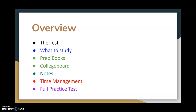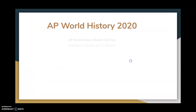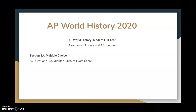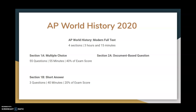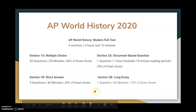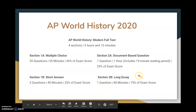The test itself is split up into four sections and is a total of three hours and 15 minutes long. The first section, multiple choice, is 55 questions in 55 minutes and is 40% of the exam score. Short answer is three questions in 40 minutes at 20%. The DBQ is one question in one hour with a 15-minute reading period at 25%. The long essay is one question in 40 minutes at 15%.